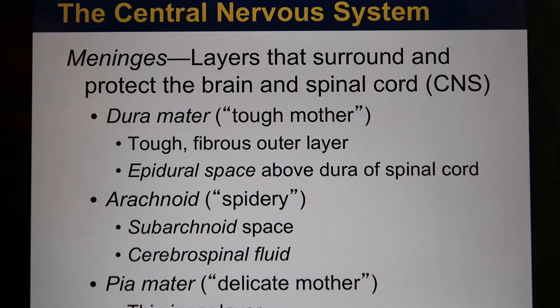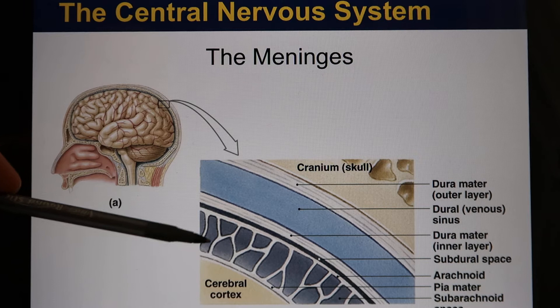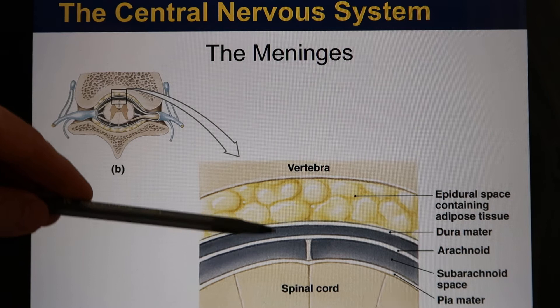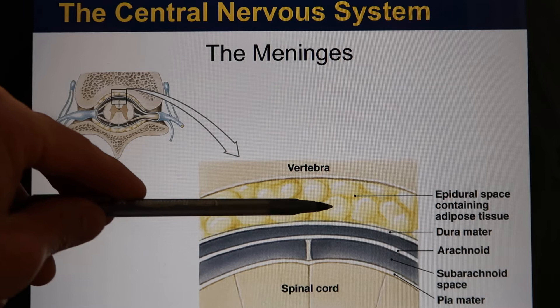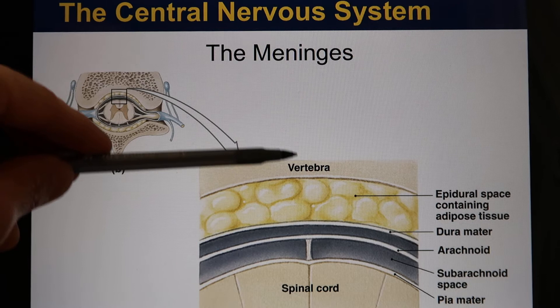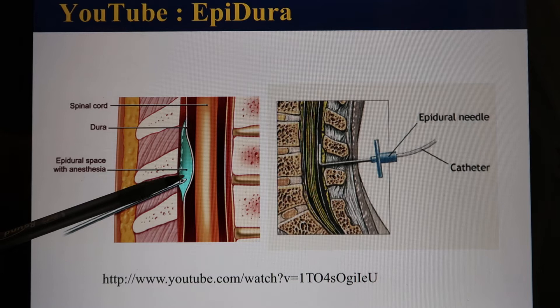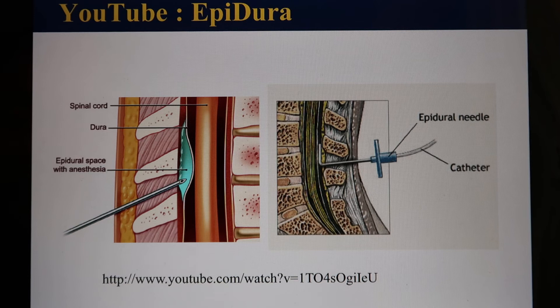The meninges extend all the way down to the spinal cord, so the spinal cord also has these three layers. Between the dura and the vertebra is the epidural space, where fat usually accumulates. This is exactly where epidural anesthesia is administered — the needle is inserted to separate the fibrocartilage and local anesthesia is placed there.